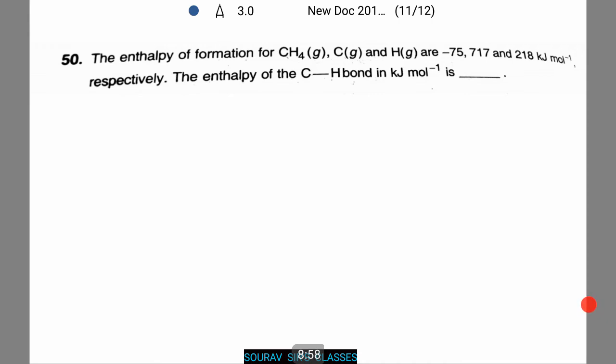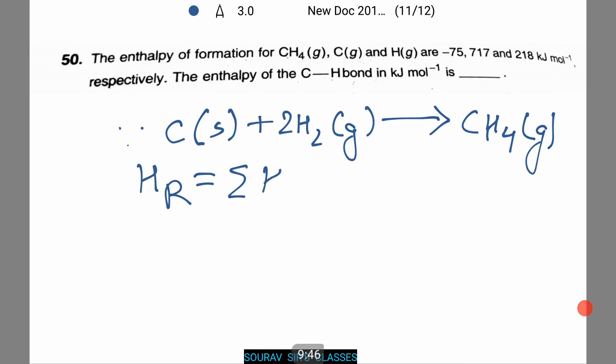In the next question we need to calculate the enthalpy of the C-H bond in kilojoules per mole. Let us first write the reaction. Carbon in solid form plus 2H2 in gaseous form gives us CH4 gaseous. Therefore HR equals summation HF degree P minus summation HF degree R.